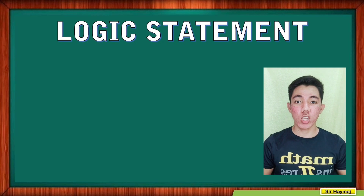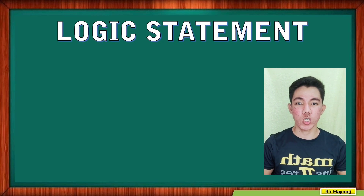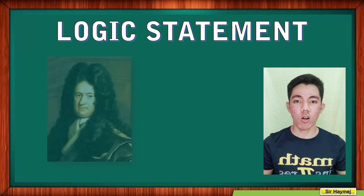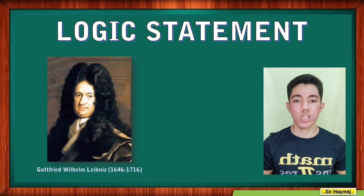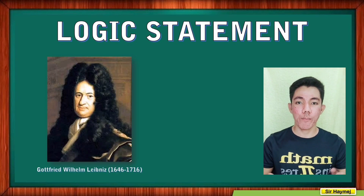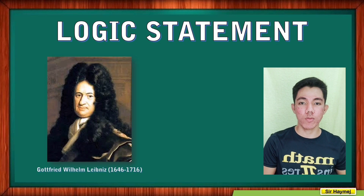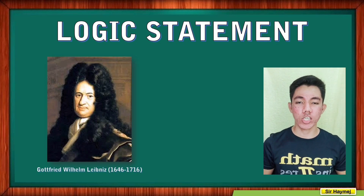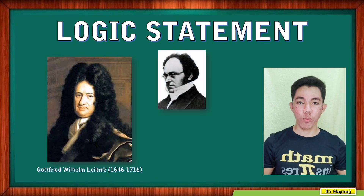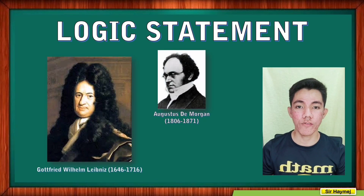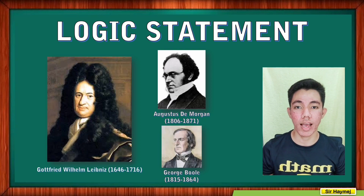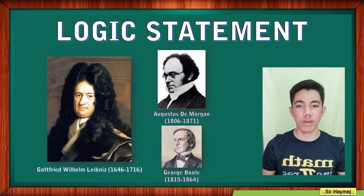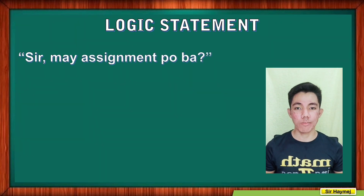Before we proceed to our discussion, let me first introduce to you the mathematicians who made a serious study about logic. First is Gottfried Leibniz, who tried to advance the study of logic from a philosophical subject into a formal mathematical subject, but never achieved this goal. He was helped by Augustus De Morgan and George Boole, who both contributed to the advancement of symbolic logic as a mathematical discipline.